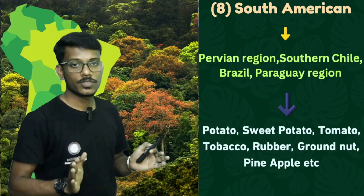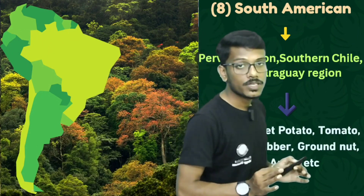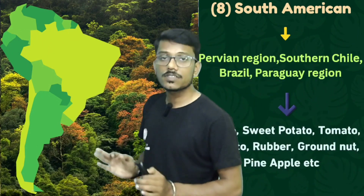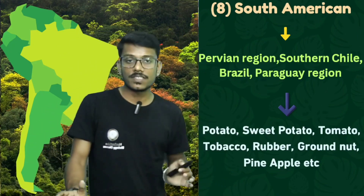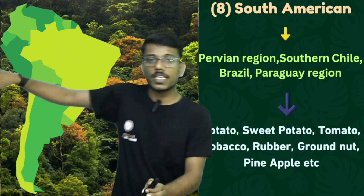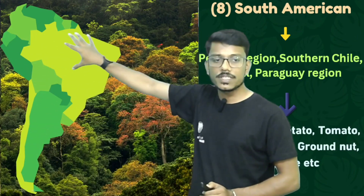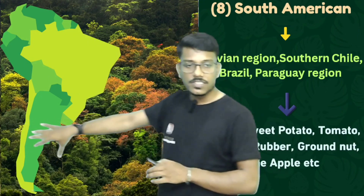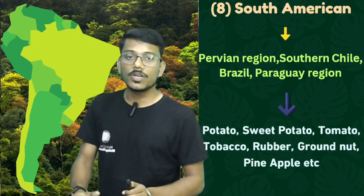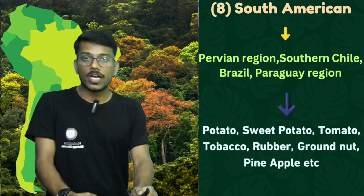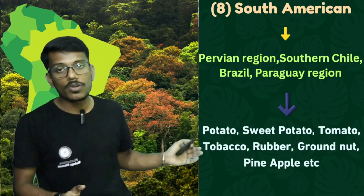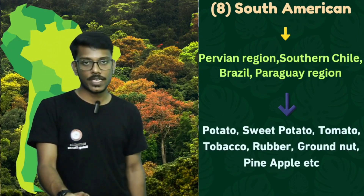The last one — the eighth — is the South American center of origin. This includes the Peruvian region, southern Chile, Brazil, and Paraguay. This region is highly diversified, and from here originated potato, sweet potato, tomato, tobacco, rubber plant, groundnut, and pineapple.